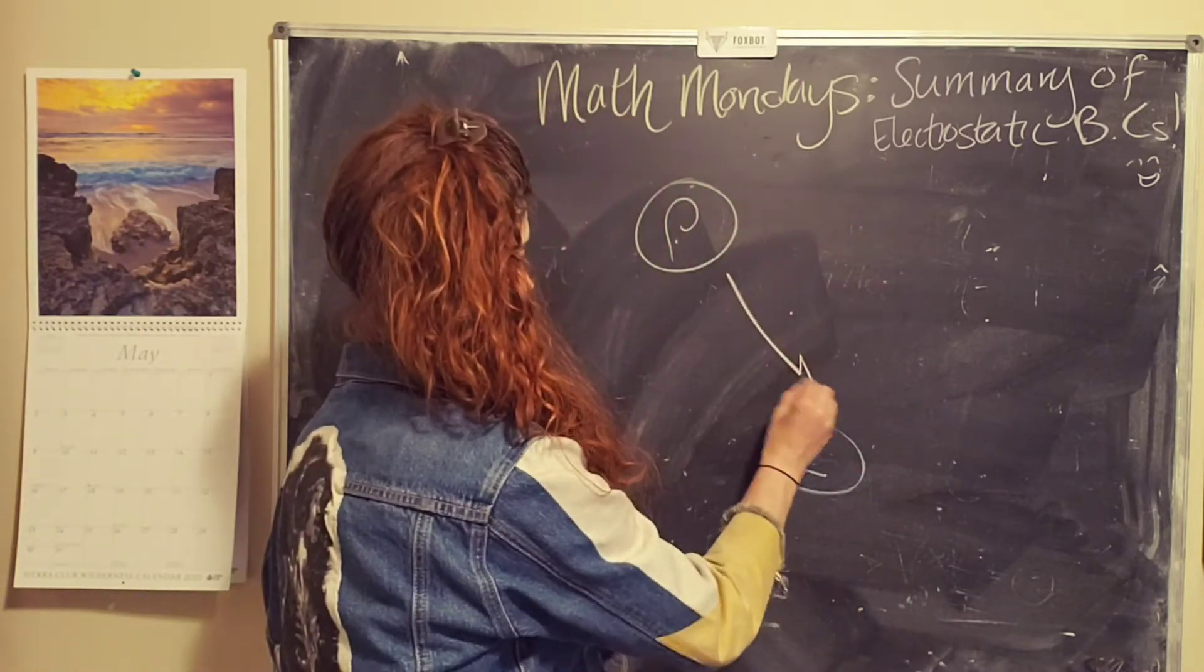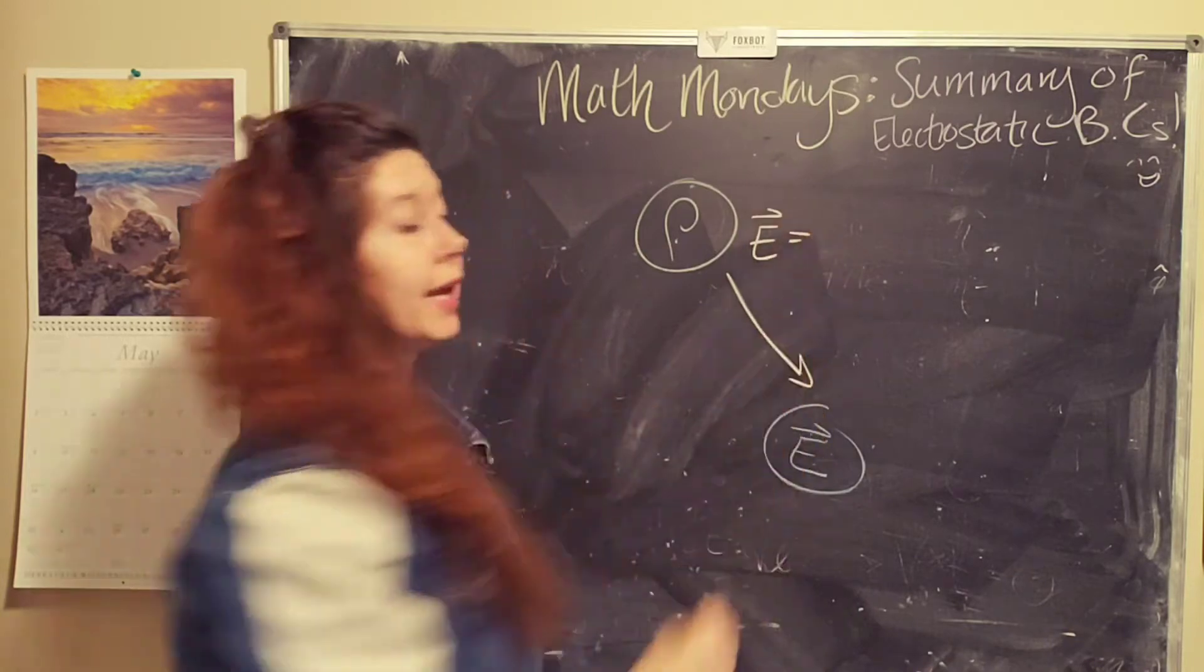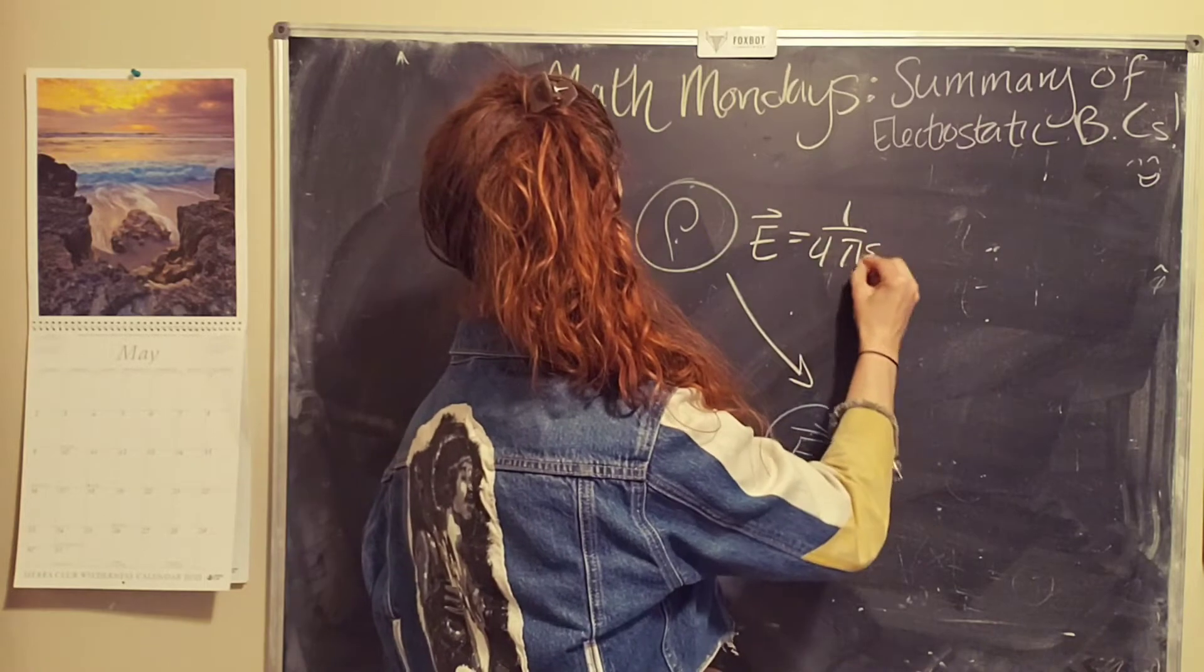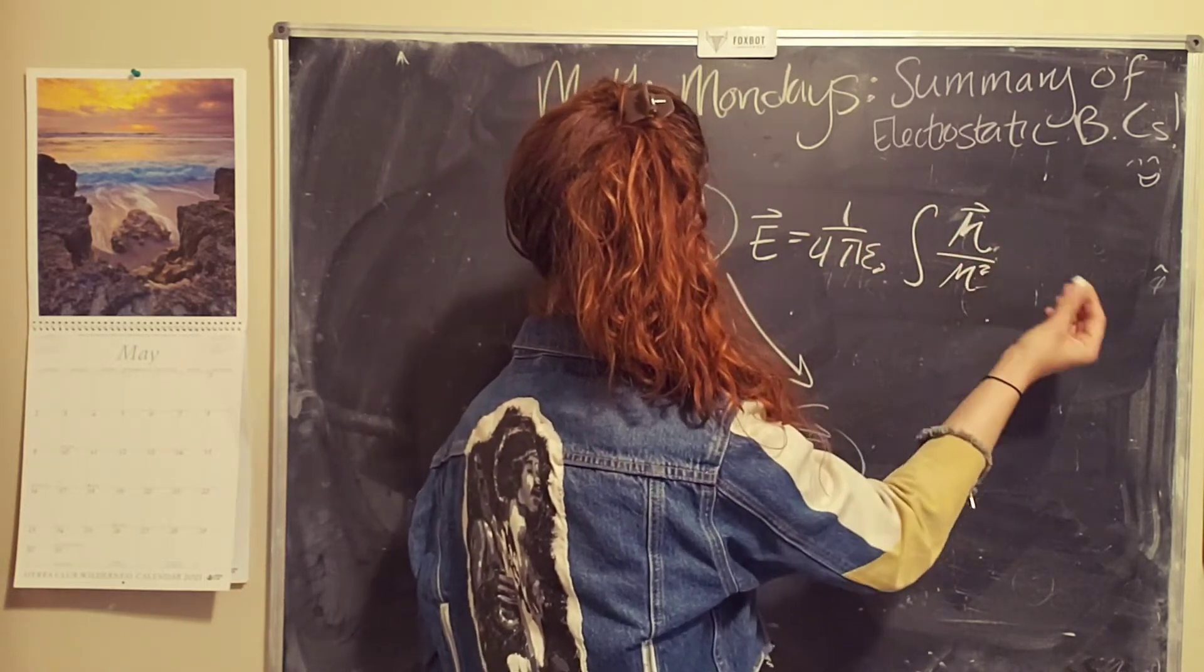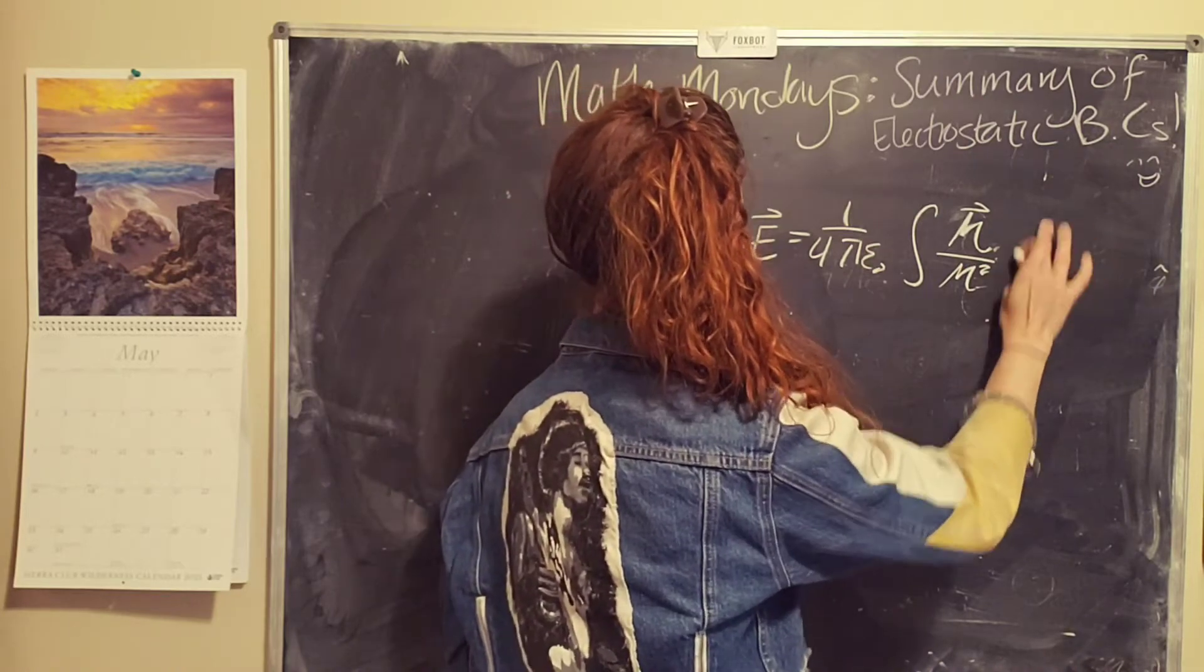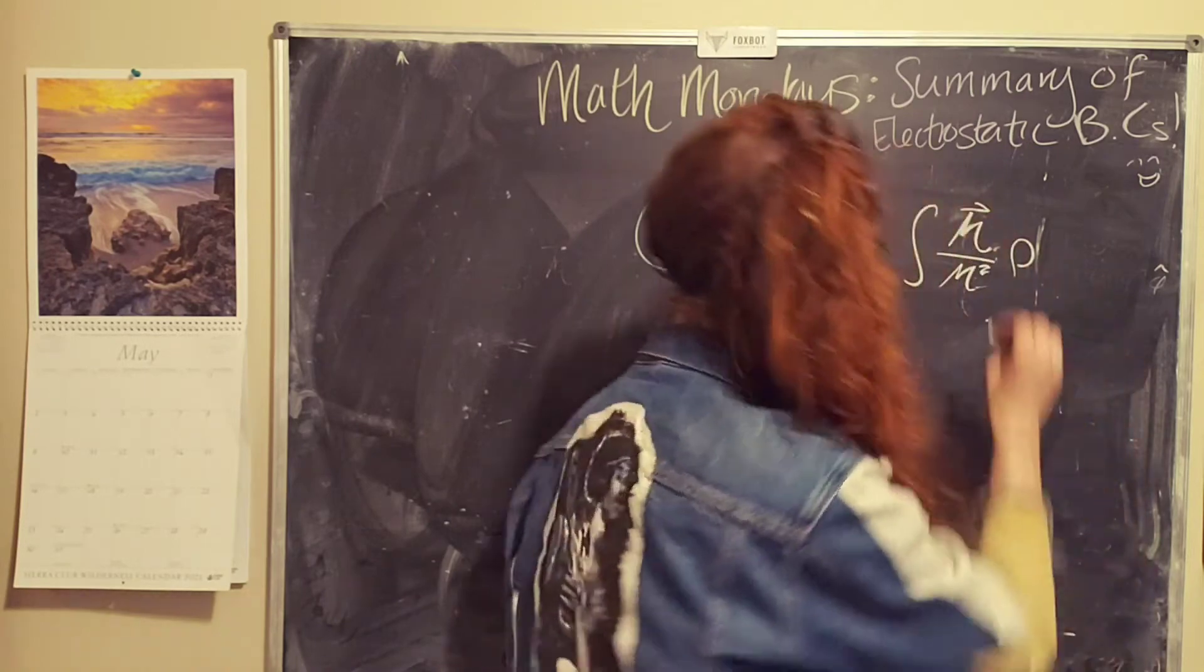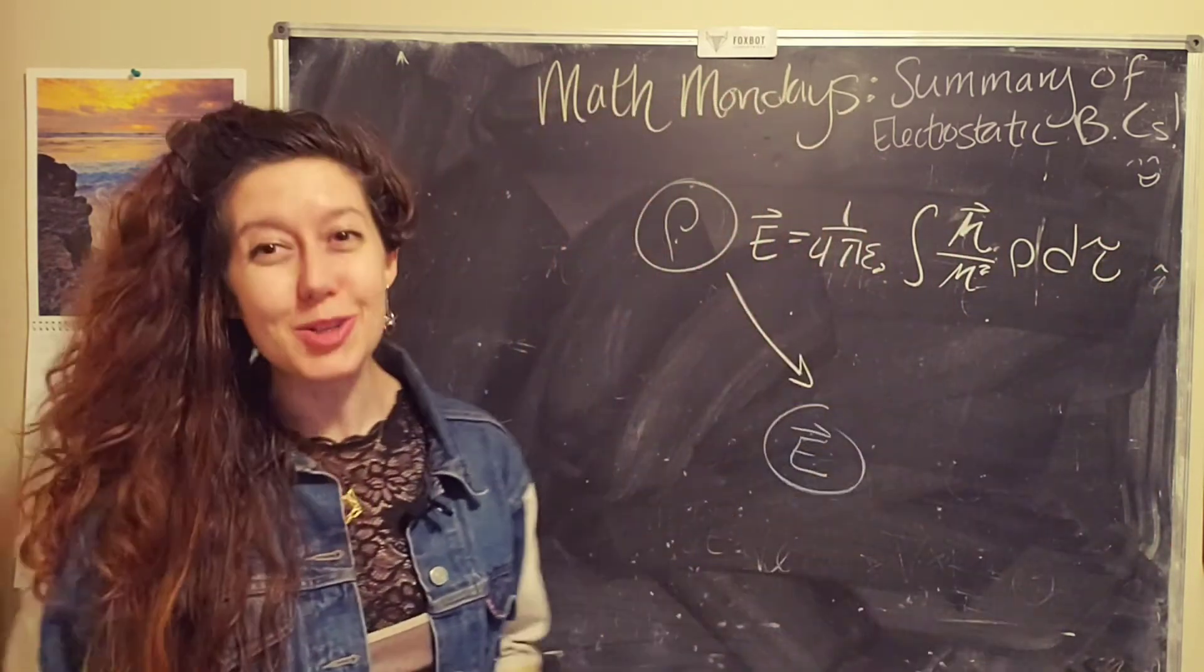And so you can always use the integral form for the electric field, which is one over four pi epsilon naught integral of script r, which is a vector over script r squared, rho d tau. So this is a general three-dimensional form.